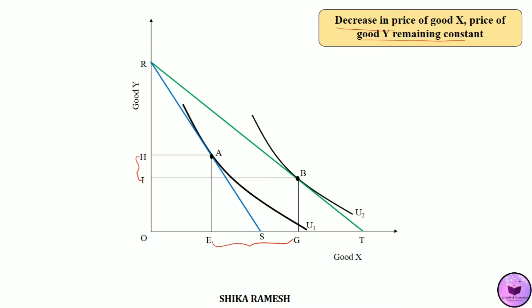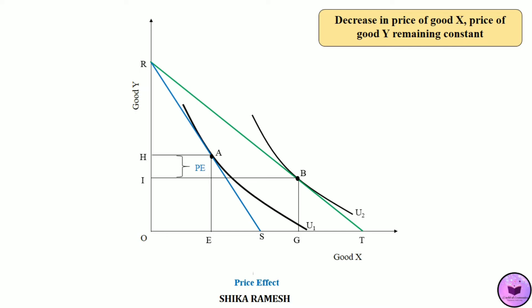Here we can clearly observe the law of demand being operational: other factors remaining the same, when the price of good X decreases the quantity demanded of good X has increased from OE to OG. So this additional EG amount of good X purchased by the consumer is because of the decrease in the price of good X, and this represents the price effect. The movement from point A to B shows the price effect.